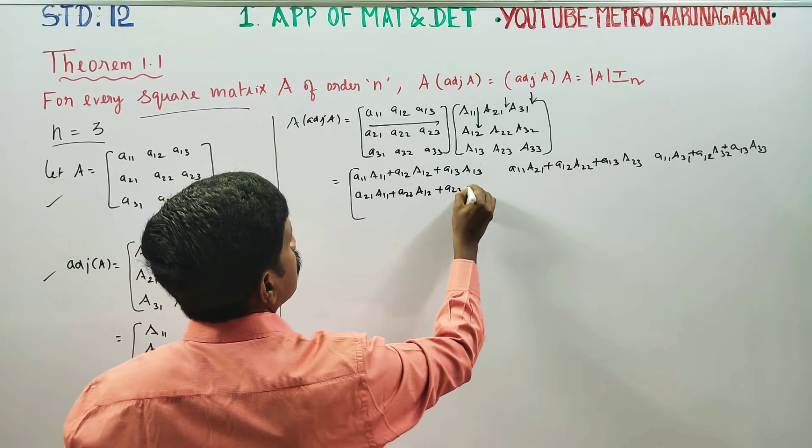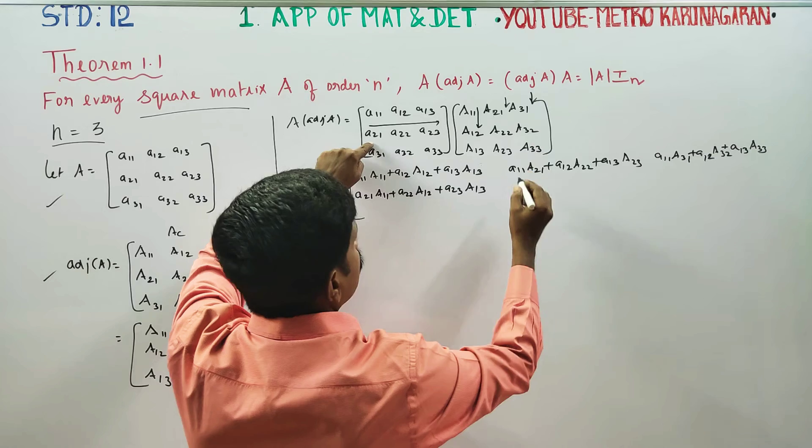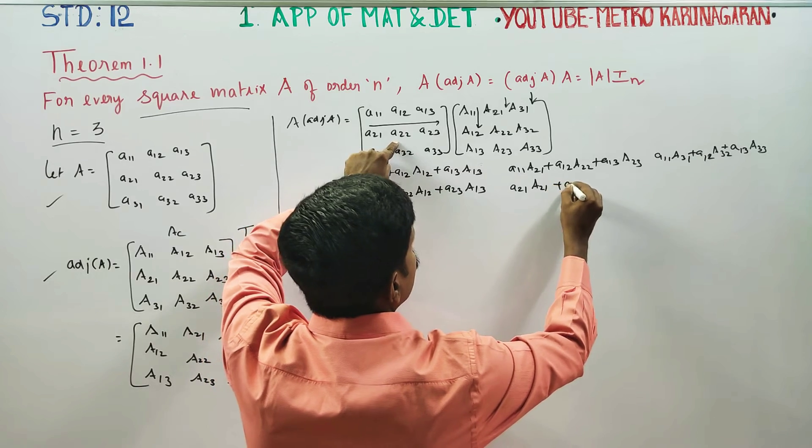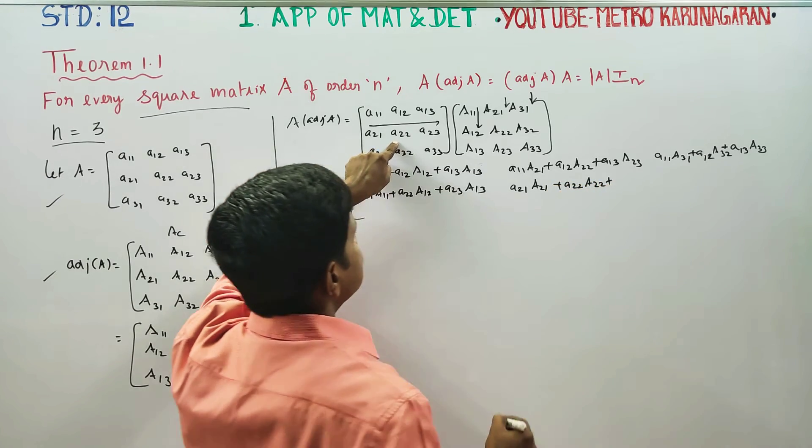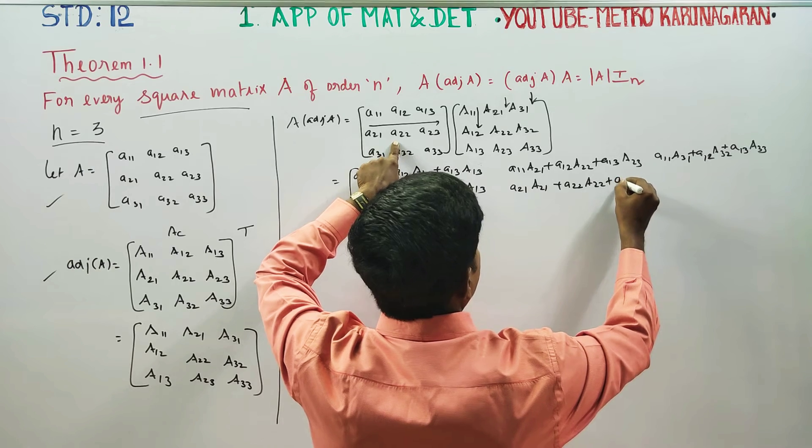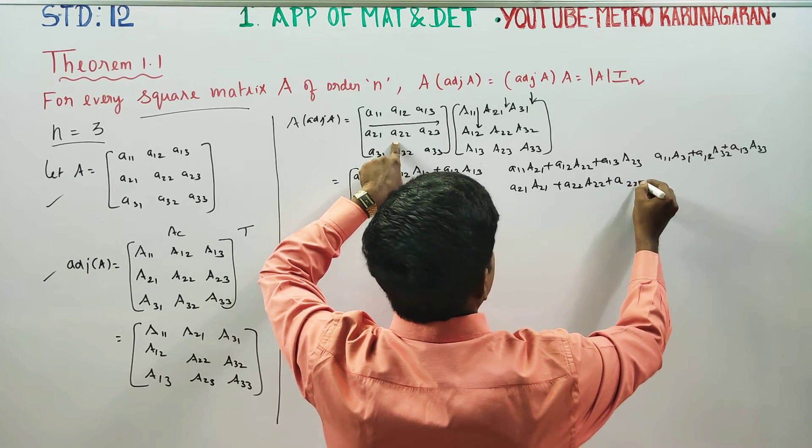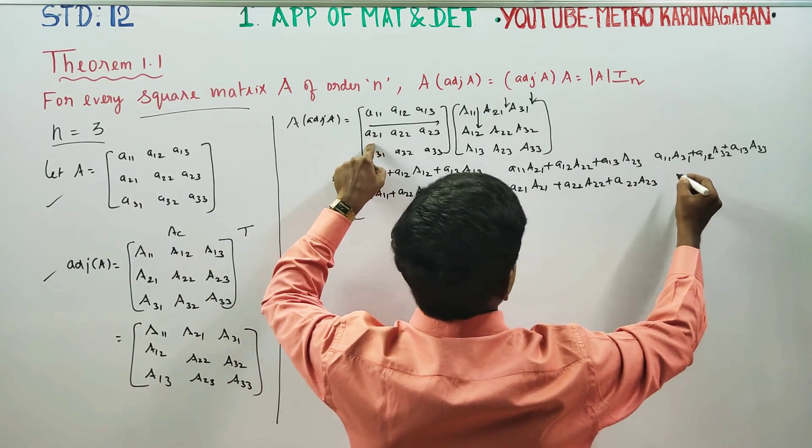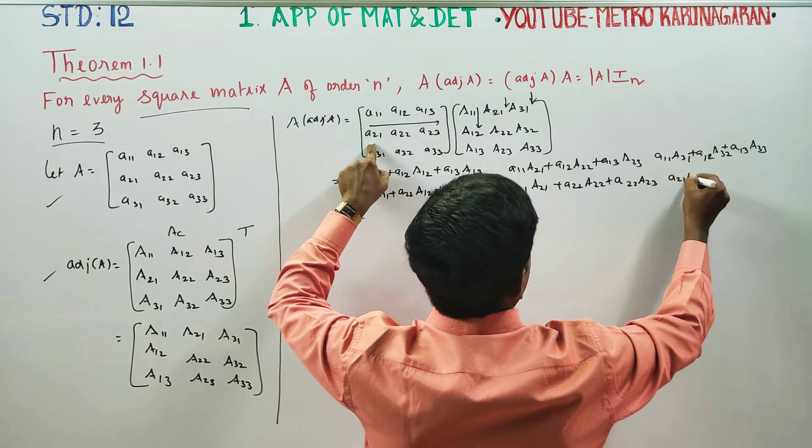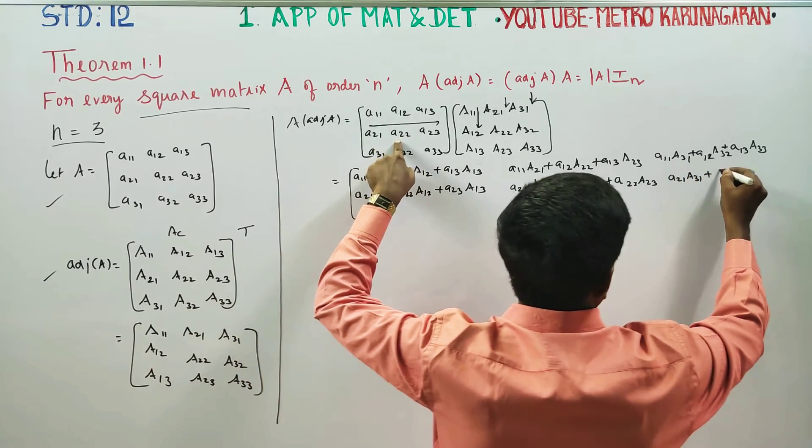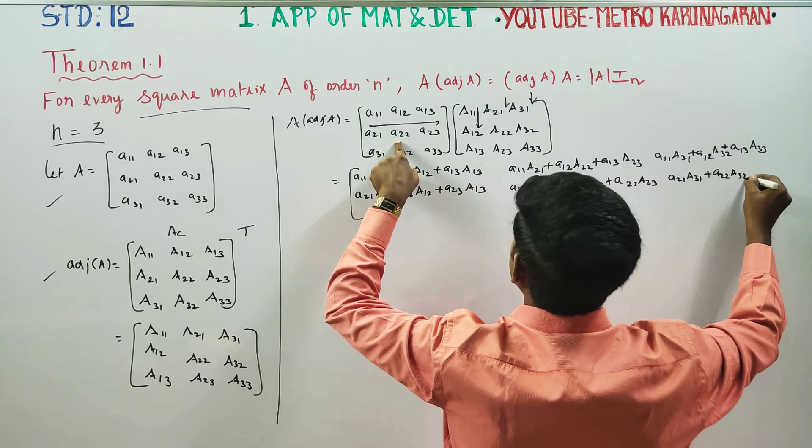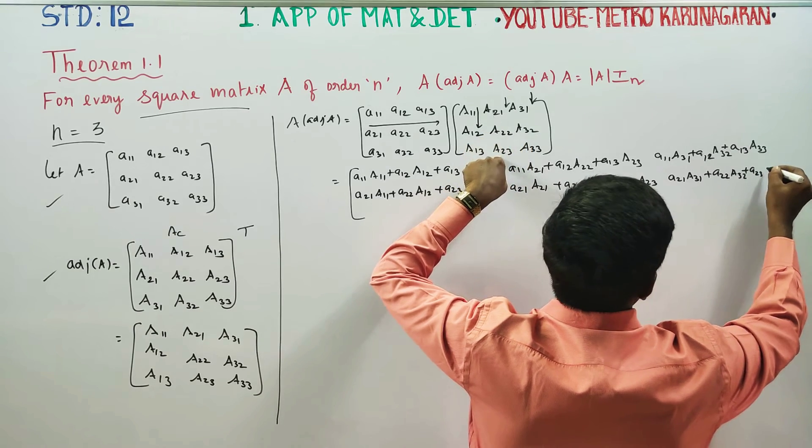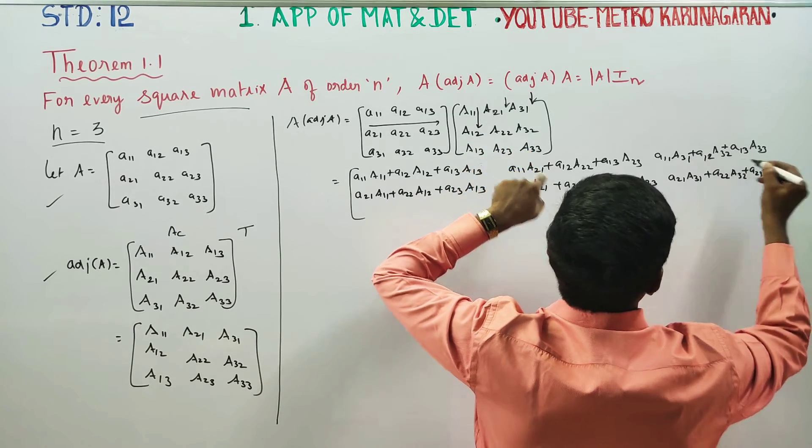Continuing with the second row elements into the adjoint columns.